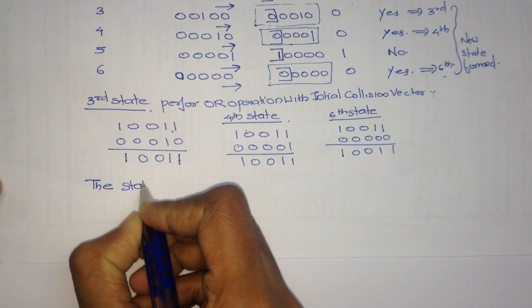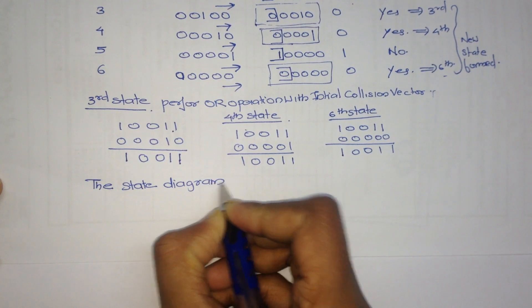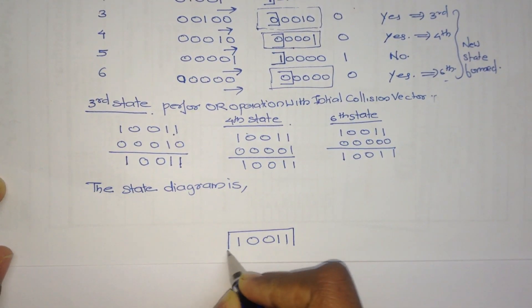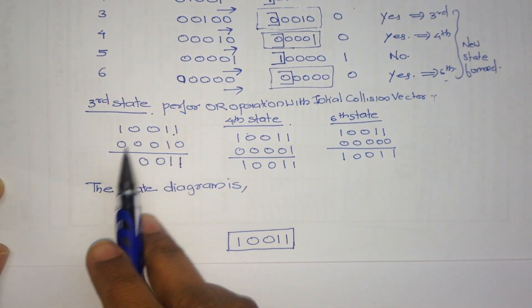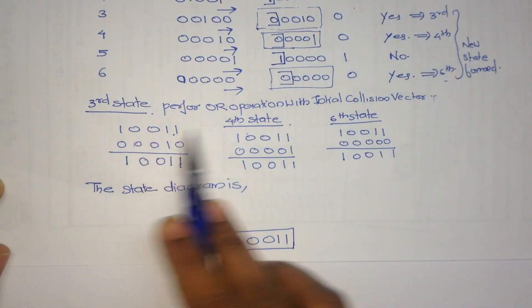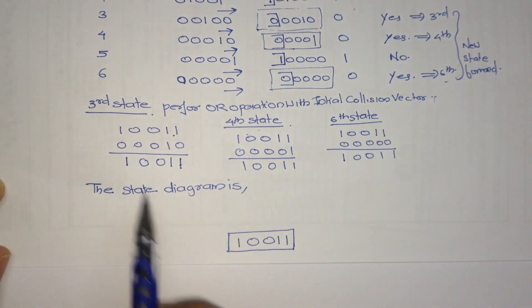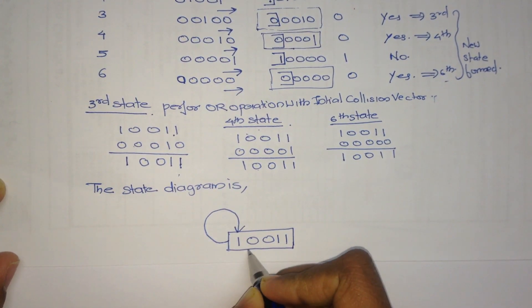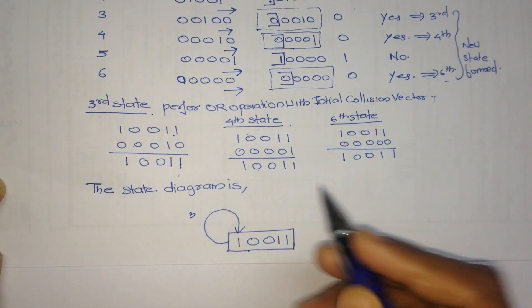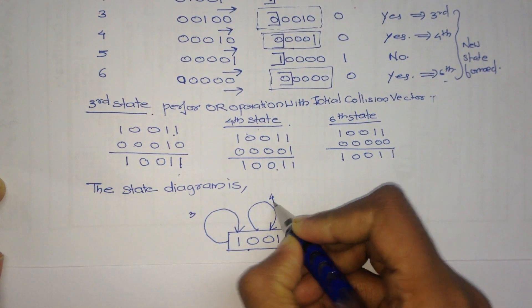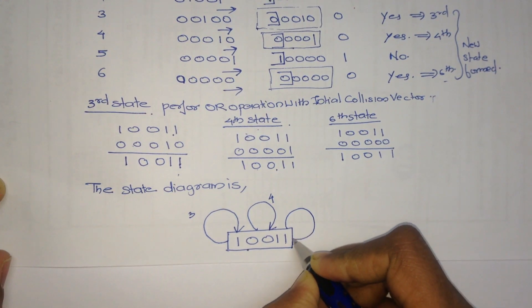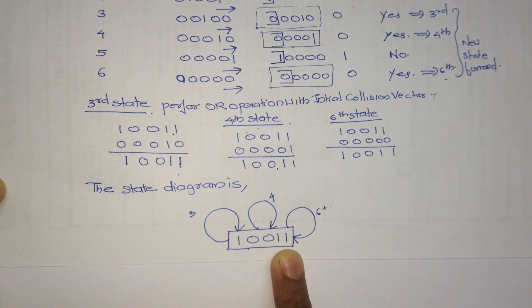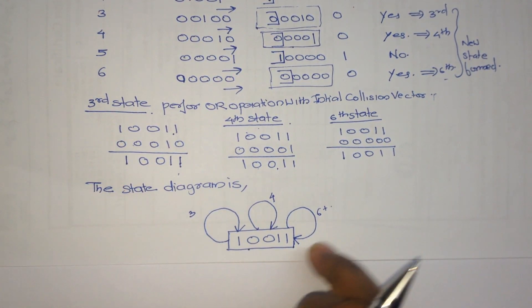Now we can draw the state diagram. First we mark the initial collision vector 1, 0, 0, 1, 1. We identify that new states occur at the third, fourth, and sixth steps. Since in all three cases the OR operation returned the initial collision vector, we self-loop all transitions back to the initial collision vector. This is the state diagram for this problem.